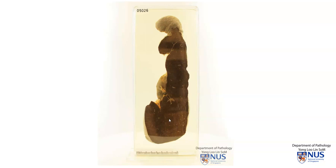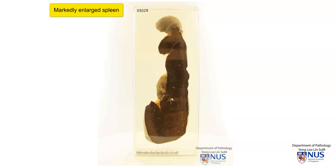So the main pathology in this specimen is the fact that the spleen is very, very large. If you look at this centimeter scale, this is about eight centimeters. And if you were to superimpose this on the height of the spleen, you'll see that it is more than 20 centimeters tall.